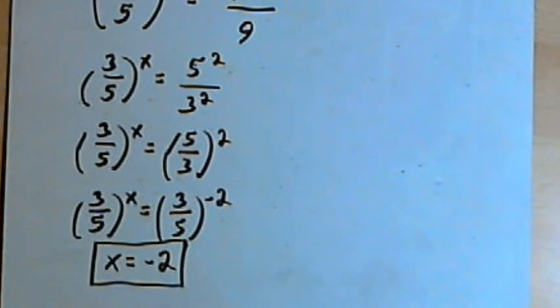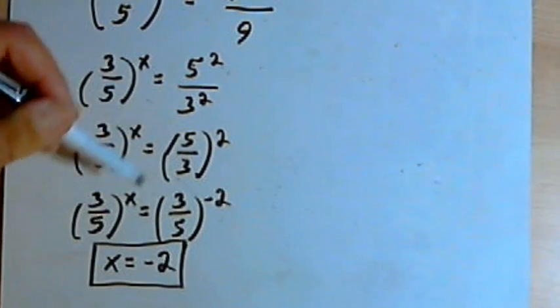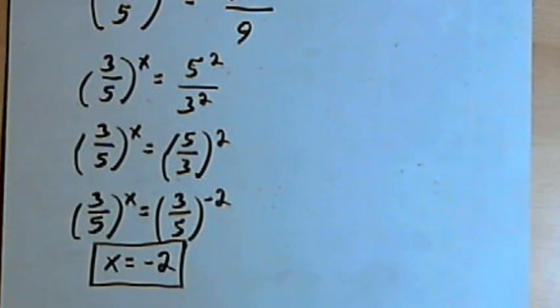So the whole trick for all of these is just to find a common base for both sides of your equation. Once you've done that, you're basically just looking at the exponents and solving for x with the exponents. Take care. I'll see you next time.